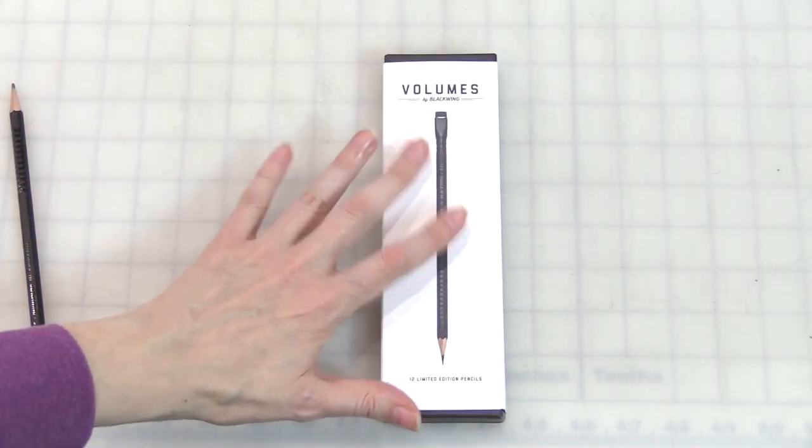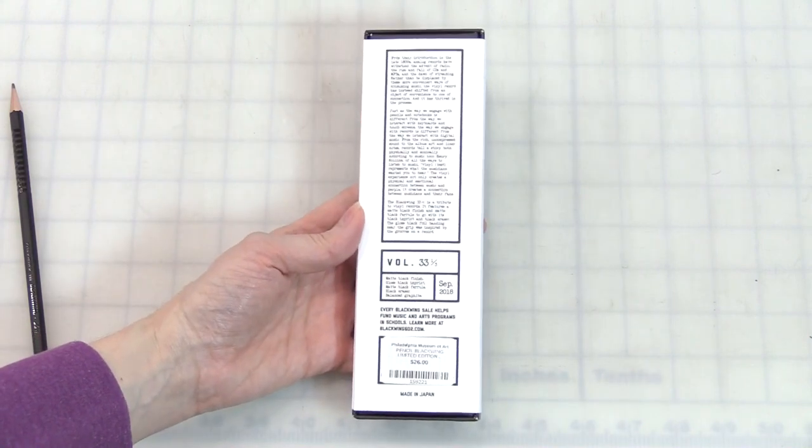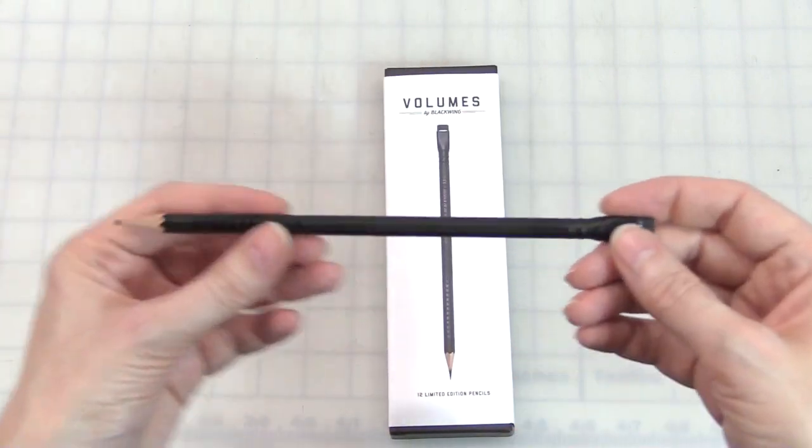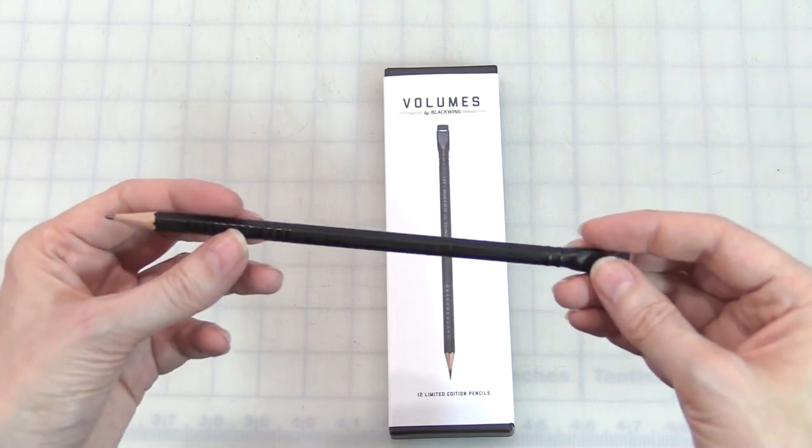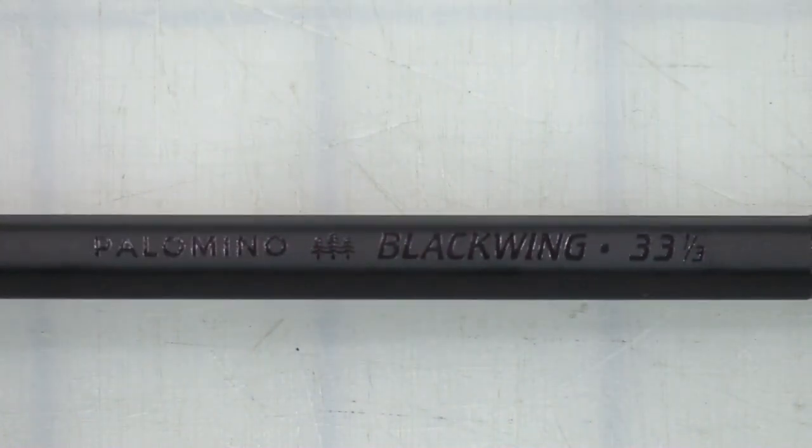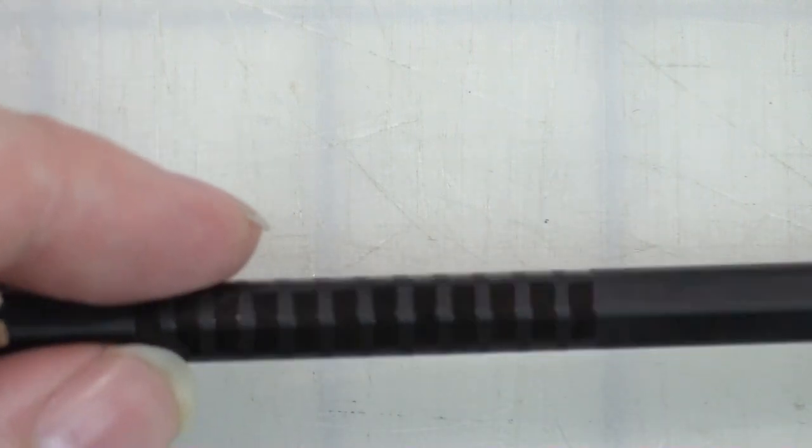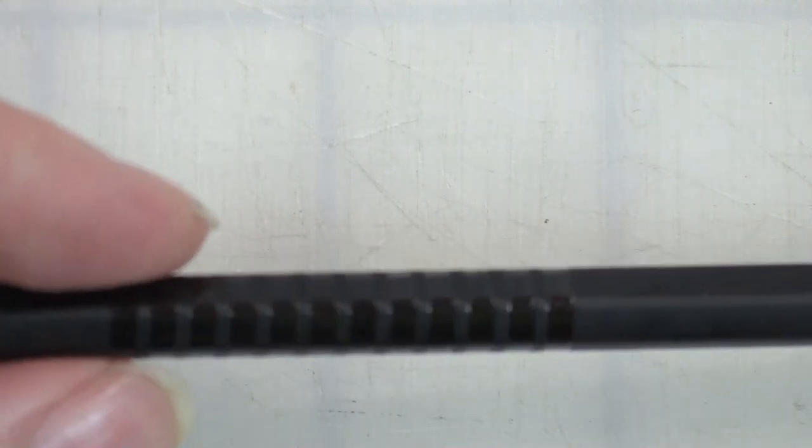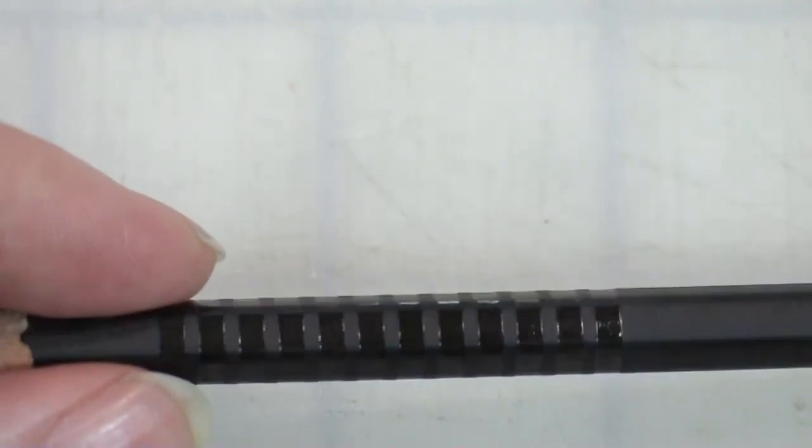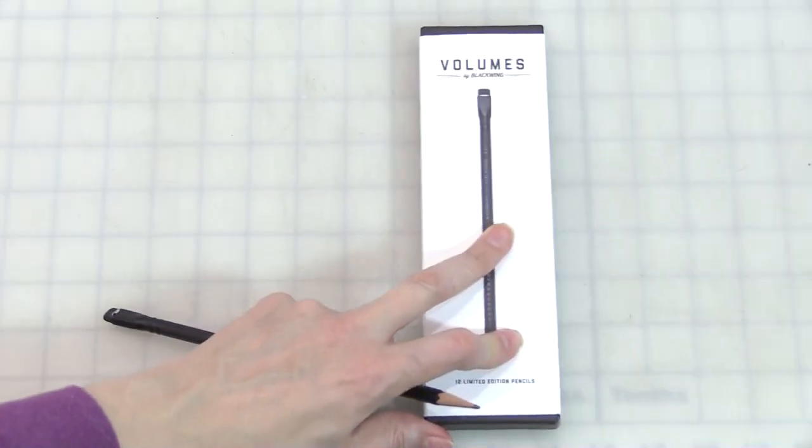There's a brand new Palomino Blackwing they've come out with, it's their 33 and a third edition, and it's pretty cool. All black, even the lettering is all black and embossed. That's just so cool, just black embossed lettering.